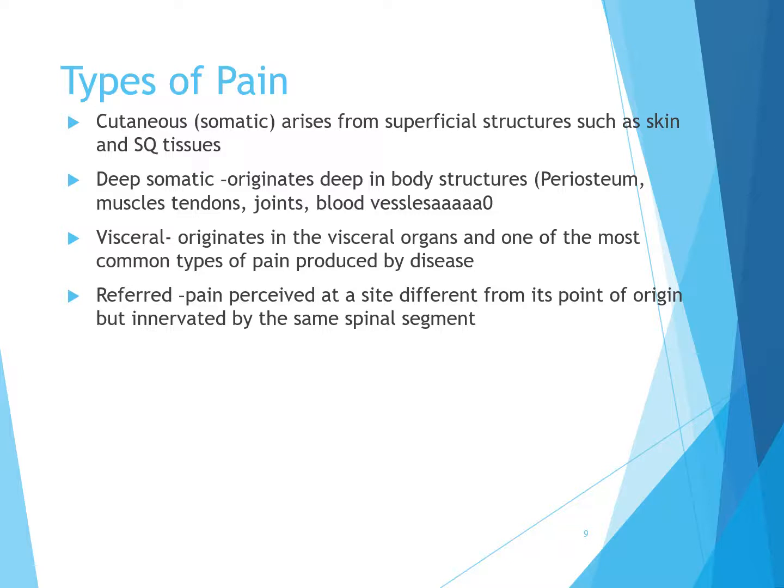Visceral pain is produced by stretching, distension, or ischemia of tissues in the body — like appendix pain. Referred pain is pain perceived at a site different from its actual point of origin, innervated from the same spinal segment. For example, someone may have foot pain that actually originates from a herniated disc in their back.